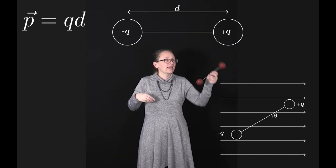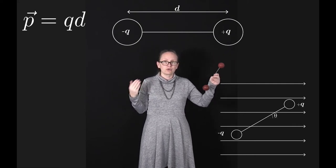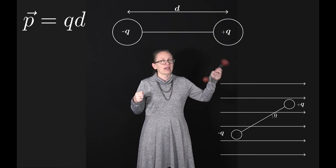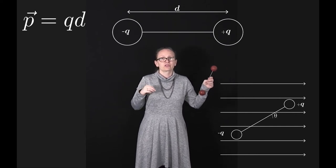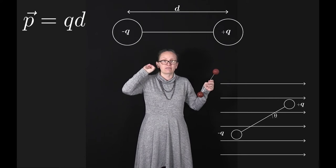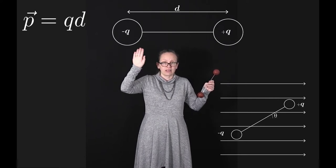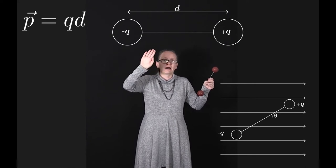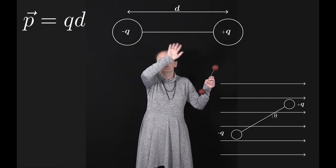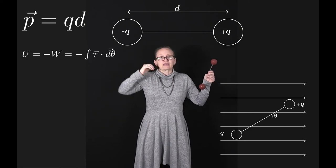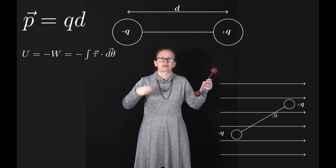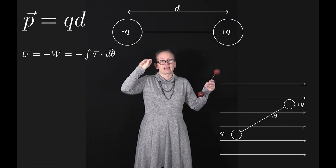As we rotate a dipole in an electric field we do work on it, so there is a potential energy associated with a dipole in an electric field. To calculate this potential energy: U equals the negative of the electrostatic work done by the field, which is minus the integral of the torque vector dotted with the angle dθ. To handle the signs properly, we need to think carefully about the vector dθ.